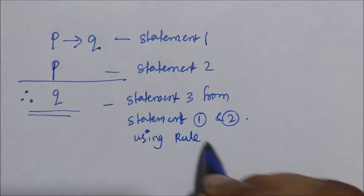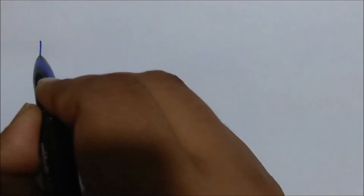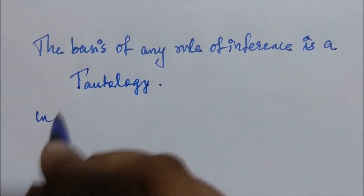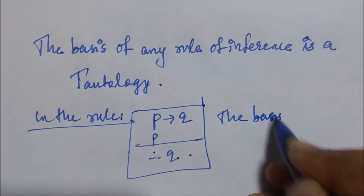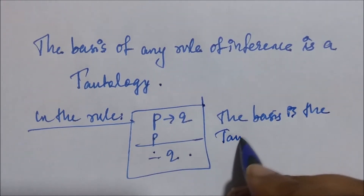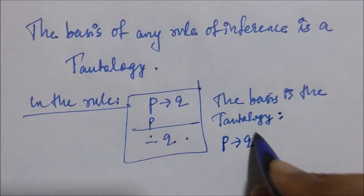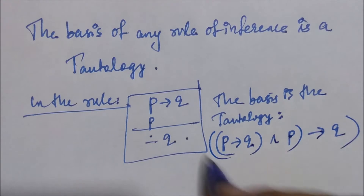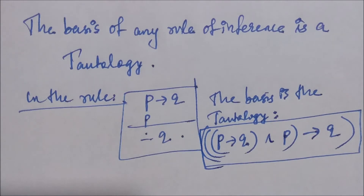We have to understand that the basis of any rule of inference is a tautology. Consider this rule: P implies Q, and P implies Q, is a tautology. This means that no matter what the values of the propositions P and Q are, this statement is always true. So when P implies Q has happened and P has happened, it has to be the case that Q always will happen.